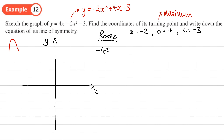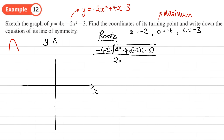Applying the quadratic formula: x = (-b ± √(b² - 4ac)) / (2a) = (-4 ± √(4² - 4(-2)(-3))) / (2(-2)). Simplifying inside the square root: 16 - 24 = -8.